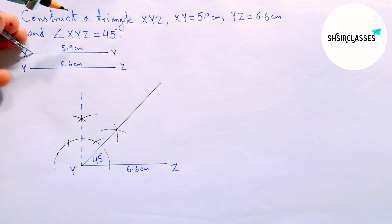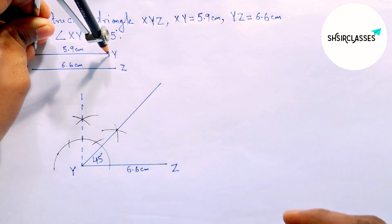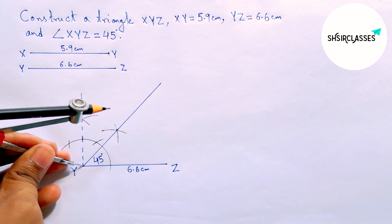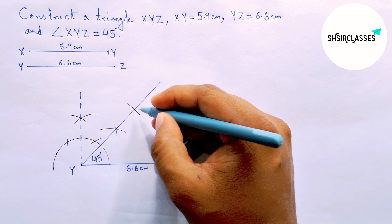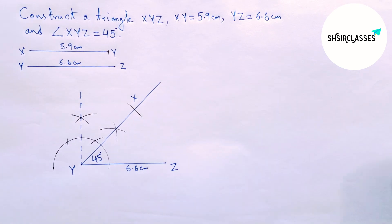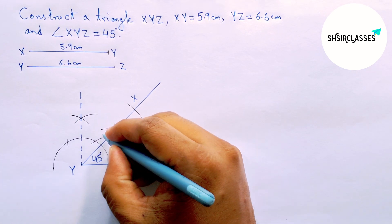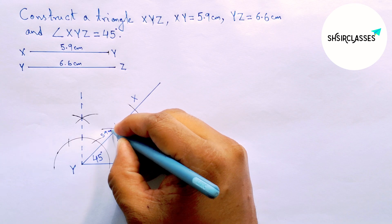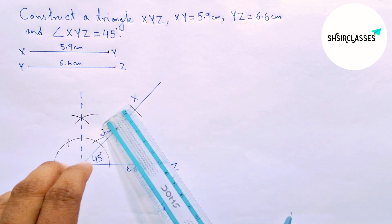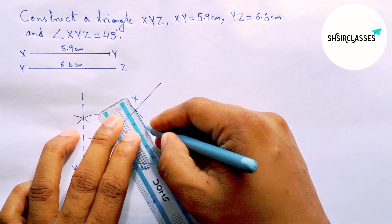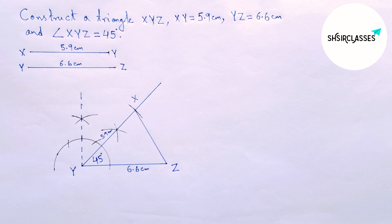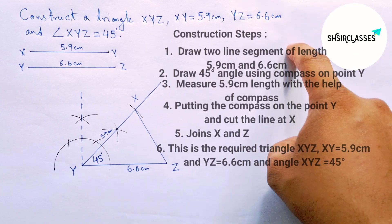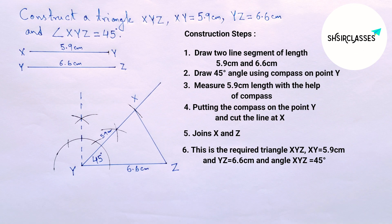Taking XY equal to 5.9 centimeters with the help of a compass and putting the compass on the point Y and cutting here. Labeling here X — XY equals 5.9 centimeters. Now joining XZ to complete our required triangle XYZ. I will provide all the construction steps here. That's all.